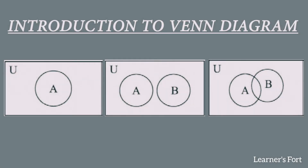Now, what is a Venn diagram? A Venn diagram is basically a simple closed figure used to show sets and the relationship between them — whether they overlap and have elements in common, or don't have anything in common. Whatever we learned about union, intersection, and difference — we were solving it on paper — now we are going to represent those answers through pictures. This is what a Venn diagram is.